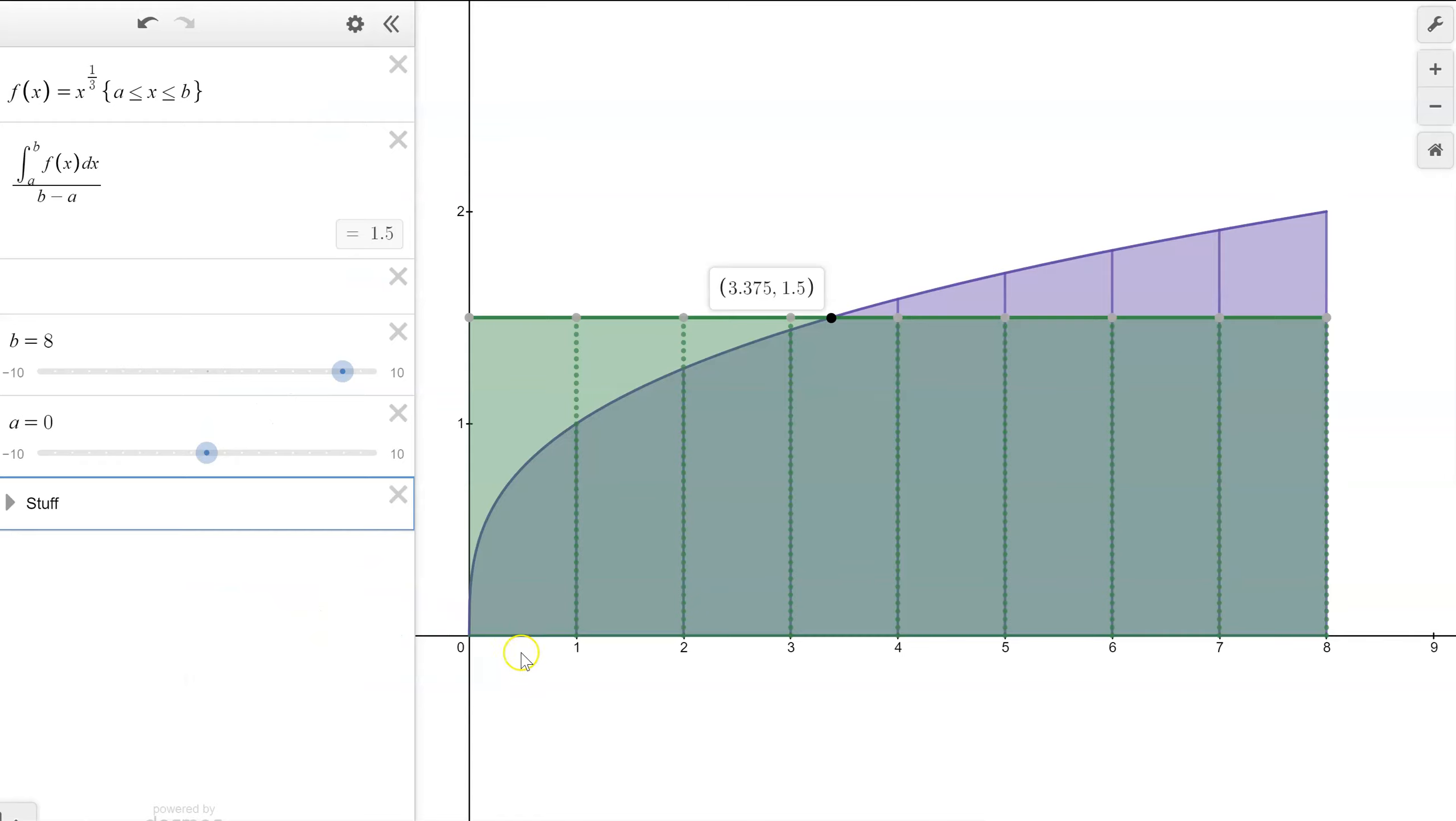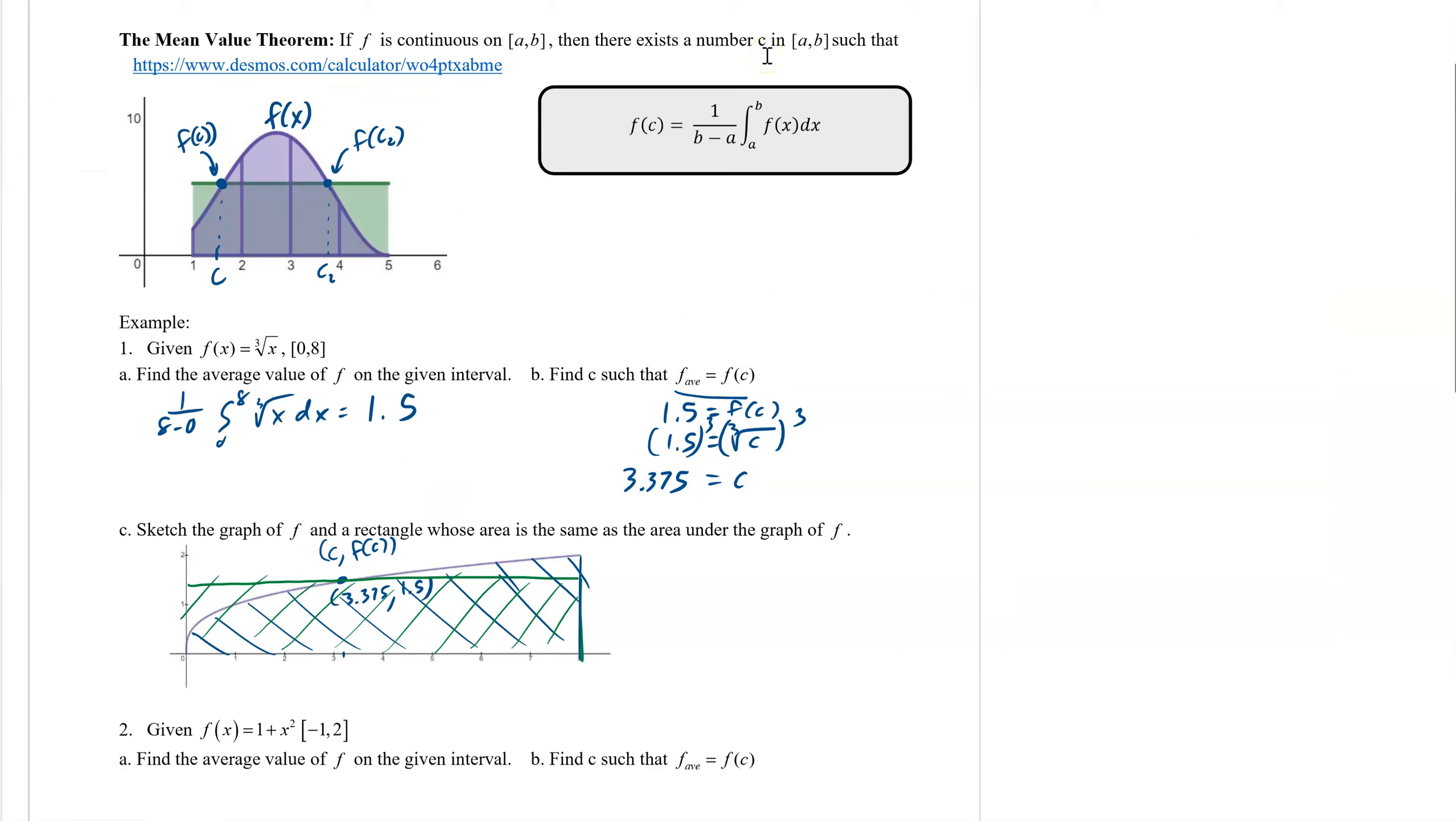Here's a better picture of our drawn. You can see it's been redistributed. Each of these little rectangles here is 1.5. If you were to take and add up all the purple and then divide them by 8, it would also come out to 1.5. Plugging in 3.375 gives us the average value. That's all it's saying, that there has to be some c that if you plug it in your function, it would be exactly the same as the average value.